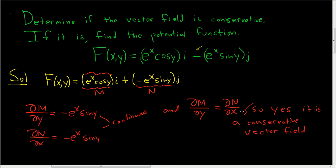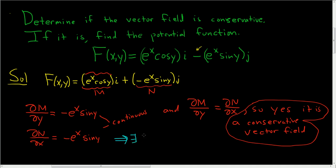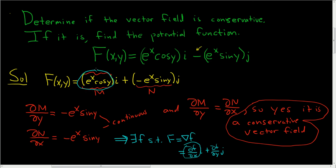So the answer is yes, it is a conservative vector field — that takes care of the first question. Because it is conservative, that means there exists a function f such that the vector field F is equal to the gradient of f. The gradient in this case is (∂f/∂x) i plus (∂f/∂y) j.